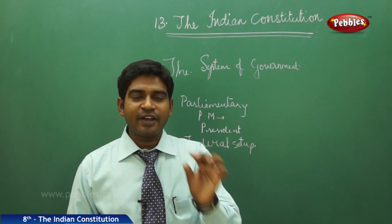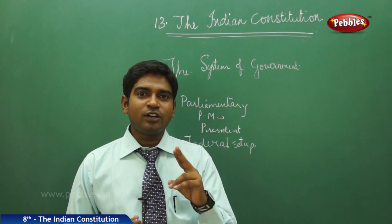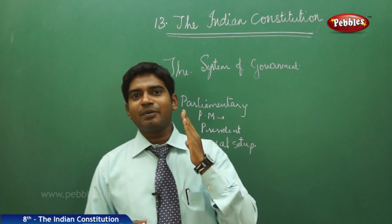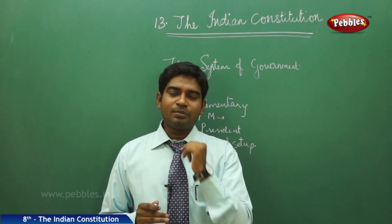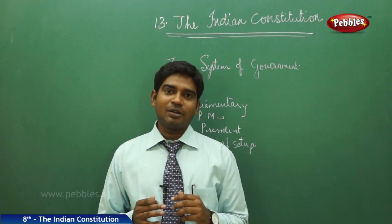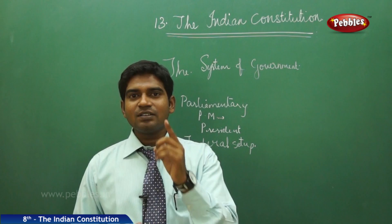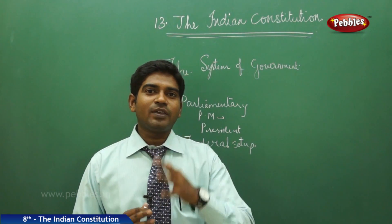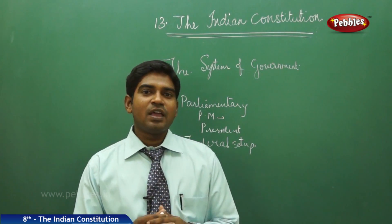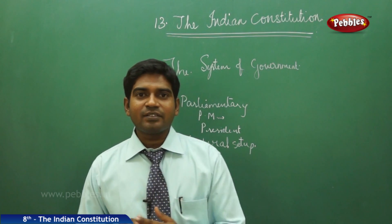We have a union government and state governments. The power is divided between the central and state governments under the State List, Central List, and Concurrent List. The union government makes laws on subjects like the army and railways, while state governments have rights to make laws on police and road transport — a clear division ensuring authority and freedom for both.